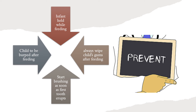Second, make the child burp after feeding and before putting him or her to sleep — this prevents pooling and helps the child swallow whatever is left in the mouth. Third, try to wipe the gums of the child at least twice a day, ideally after feeding. Fourth, start brushing as soon as the first tooth erupts — there's no waiting. As soon as you see the first tooth, start brushing. All four of these steps help prevent simultaneous multiple primary tooth decay.